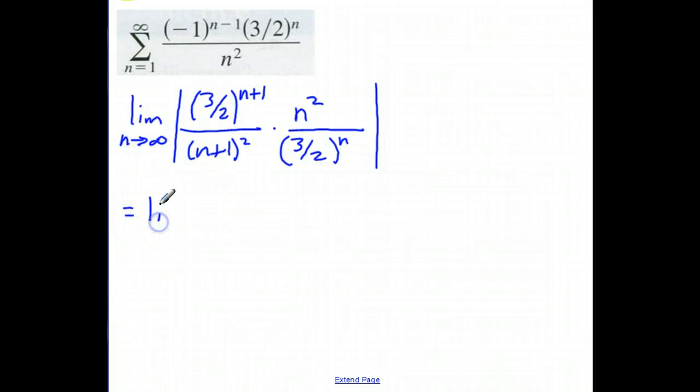Let's simplify this. That's the limit as n approaches infinity. So I have 3 halves to the n plus 1 divided by 3 halves to the n. I'm going to subtract my exponents. That leaves me with 3 halves to the first power times n squared. I'm going to multiply this out. That's going to give me n squared plus 2n plus 1.